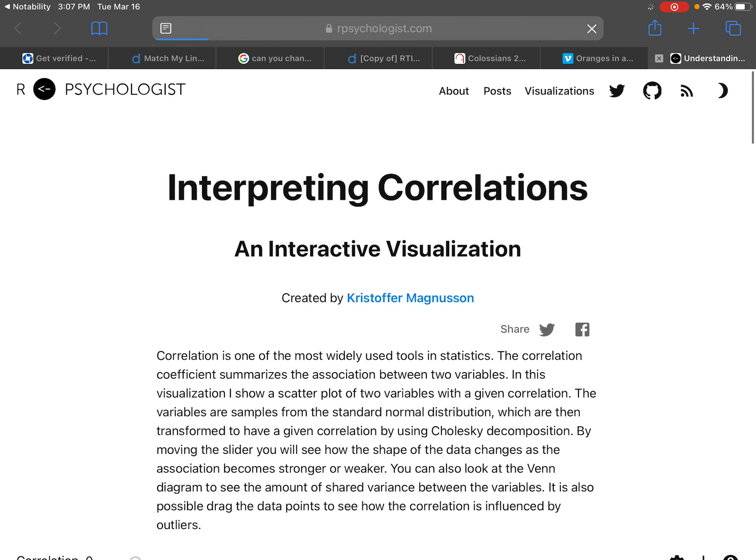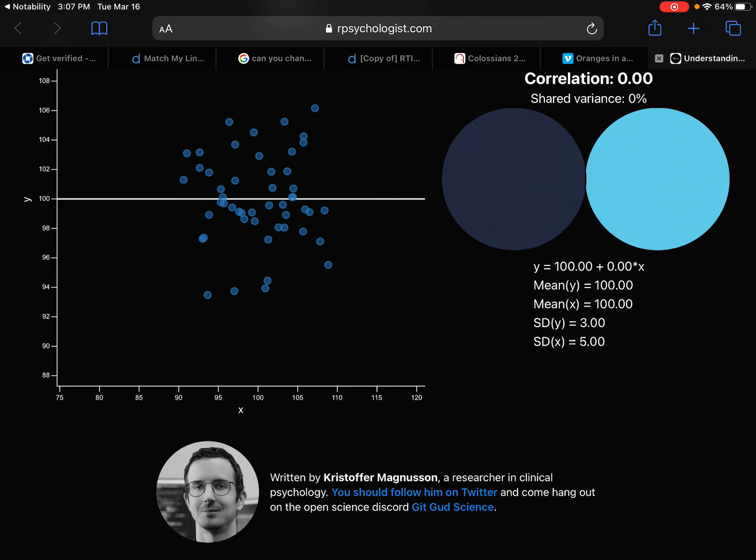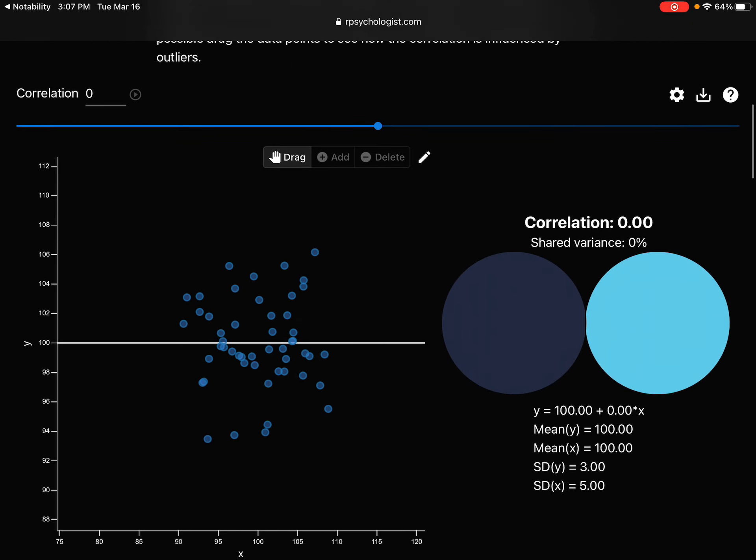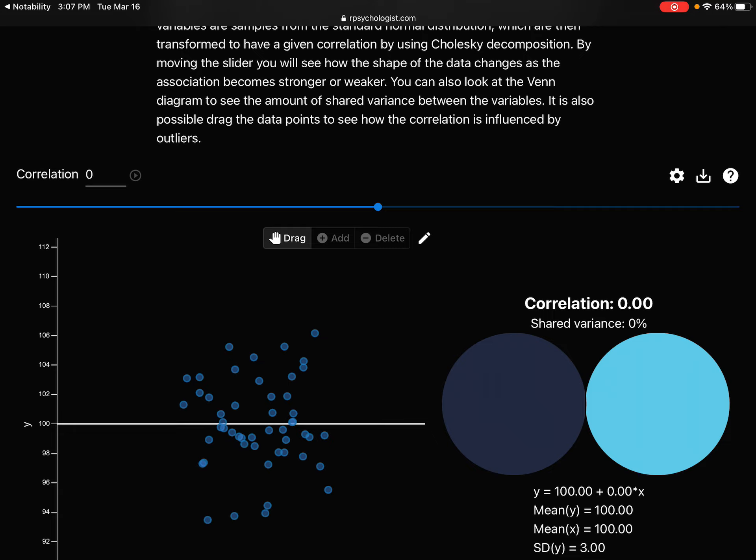If we open that up in Safari, the link that is there, we get this picture here. Notice there's a scatter plot, and right now the scatter plot doesn't have a particular pattern. I want you to notice that the correlation along with that pattern up here on the left is considered to be zero.